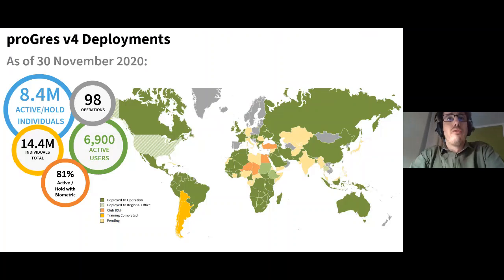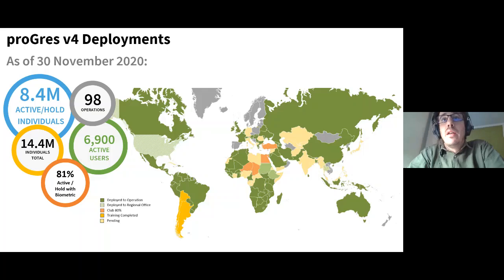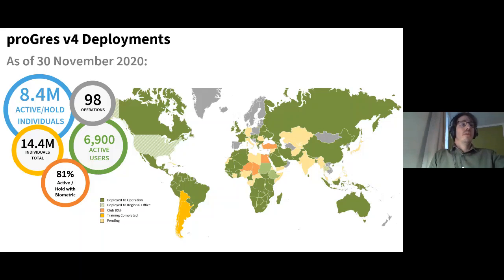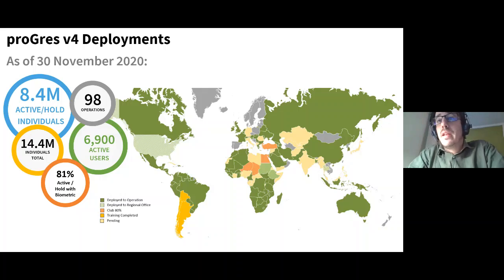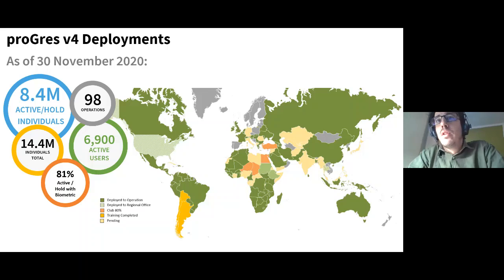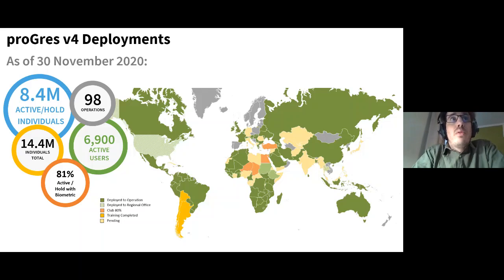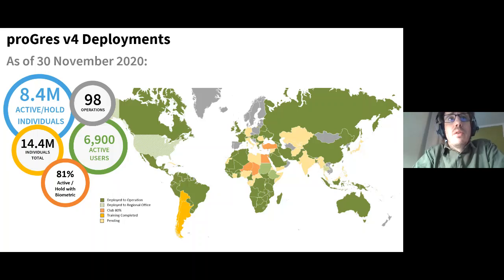Progress Version 4 is our latest version. Development of Progress began in the early 2000s. As technology moved on, the need for a more robust data collection and management system became apparent — in the 90s we were using Excel sheets, and before that, ledgers. It quickly became clear that simple databases were not sufficient to cover all the different aspects of beneficiary data management. Progress is not just a database or a place to record information; it is much more capable than that, as we will see.